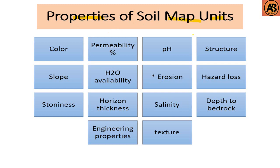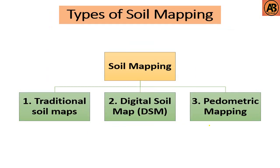The properties of soil map units include color, permeability, pH, structure, slope, water availability, erosion hazard, and loss. These are the key properties associated with soil map units.